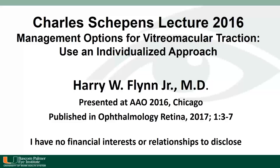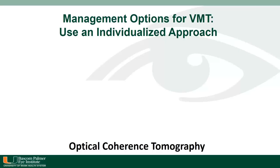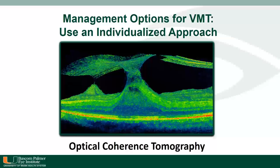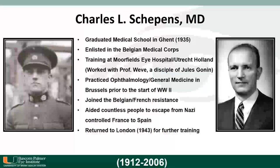I'm grateful to the American Academy of Ophthalmology for the honor of presenting the 2016 Charles Scapins Lecture. The title of my presentation is 'Management Options for Vitreomacular Traction: Use an Individualized Approach.' The management options will be demonstrated with patient examples, but I'd like to show the pathology at the beginning. Here you see the relationships between the vitreous, which is still attached at the foveal center. This distortion of the foveal anatomy results in distortion and loss of vision for patients. Today I hope to address what are the best individual strategies for patients.